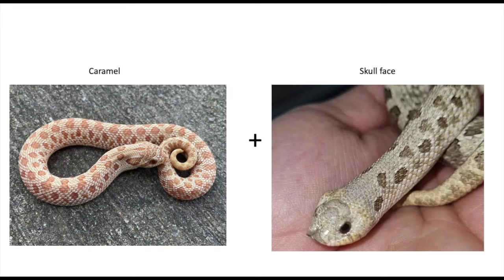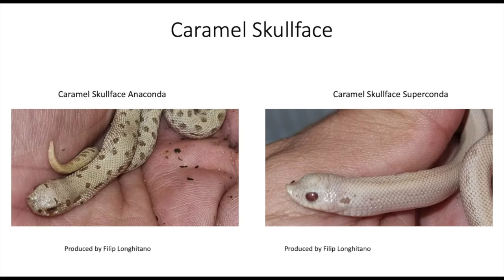Next up we're going to combine caramel with the skull face, which is very interesting because the caramel gene reduces the head pattern and the skull face completely reduces the head pattern. So this is the caramel skull face anaconda, and then the caramel skull face superconda, which almost completely has no pattern — it has just a little pattern where your ear would be, but other than that it's almost completely patternless. This one also looks like an albino version — you can see the red eyes.